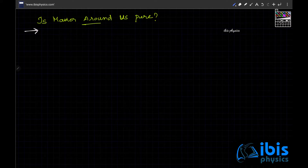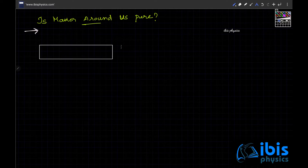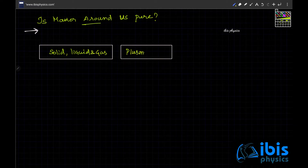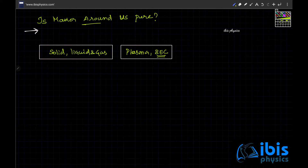We already discussed five states of matter. The naturally occurring five states of matter are solid, liquid, and gas, and in addition to that, plasma and Bose-Einstein condensate. Plasma is what stars are made of, and solid, liquid, and gases are what we encounter in our everyday life.